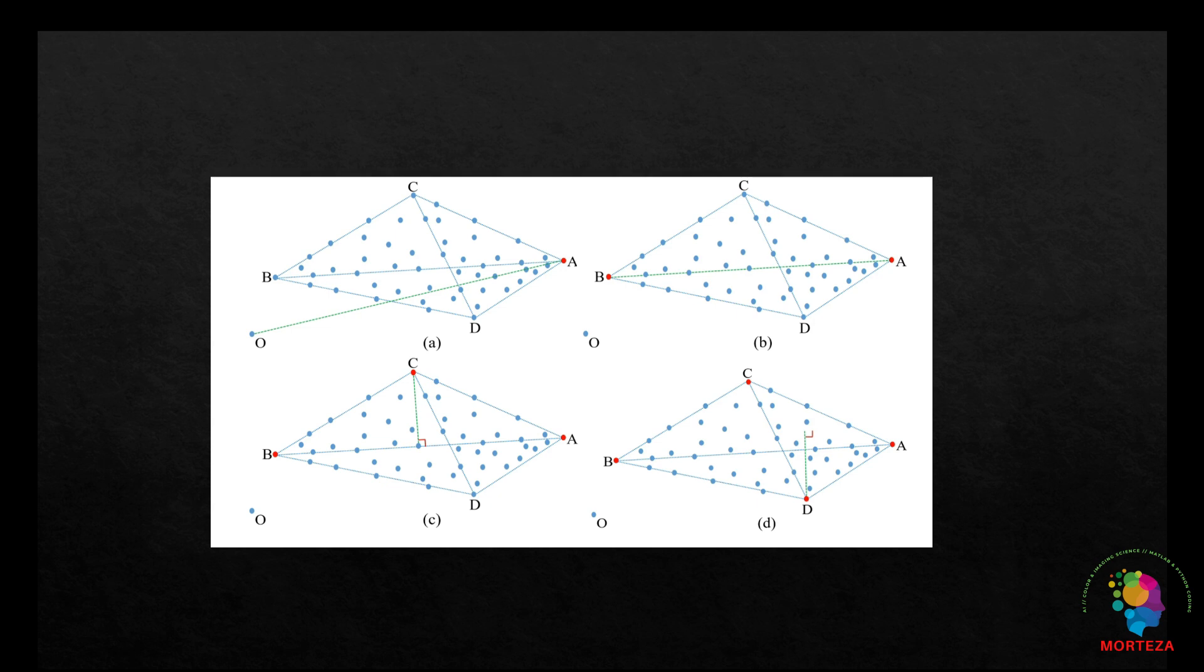With this, the first and second end members are projected onto one another and form a new point. The furthest point from this new point becomes the next end member, and this is repeated until the required number of end members are calculated.